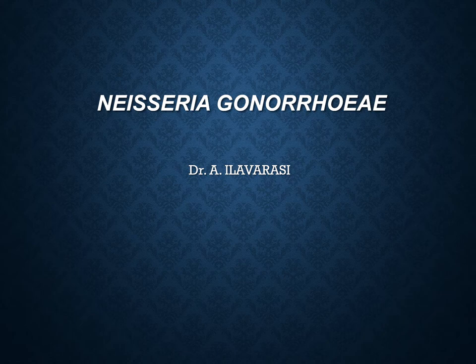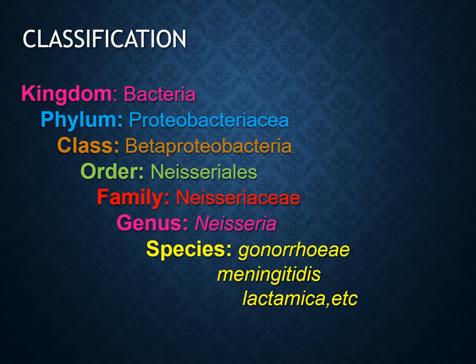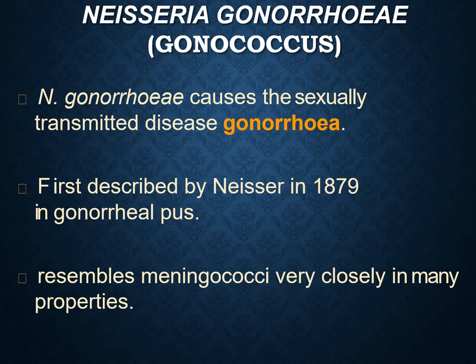Hello everyone, today we are going to discuss Neisseria gonorrhoeae. Neisseria gonorrhoeae is also known as gonococcus or monococci. It is a gram-negative bacteria, diplococci, and it was first isolated by Neisser in the year 1879. Neisseria gonorrhoeae belongs to the kingdom Bacteria, phylum Proteobacteria, class Betaproteobacteria, order Neisseriales, family Neisseriaceae, genus Neisseria, and species gonorrhoeae.